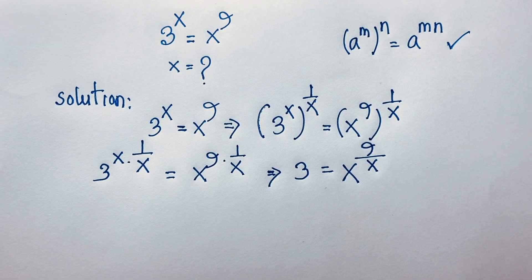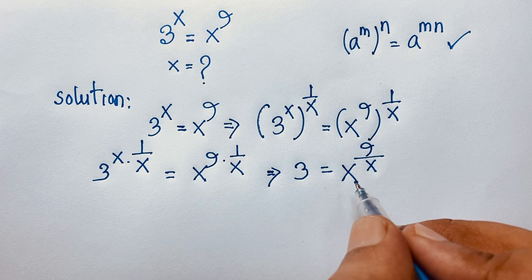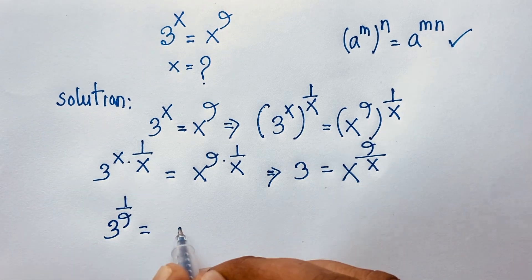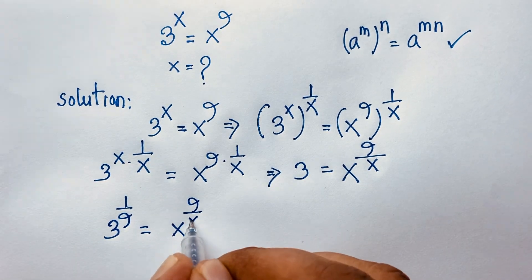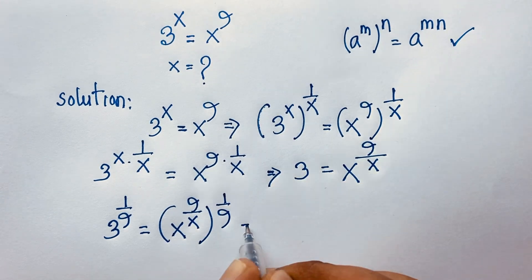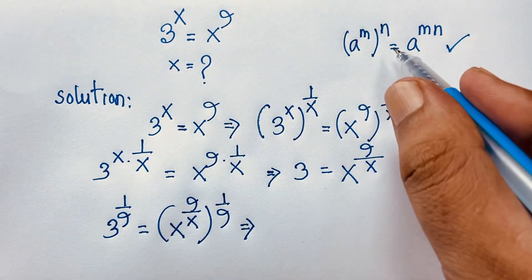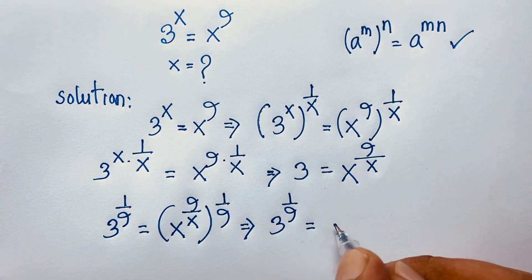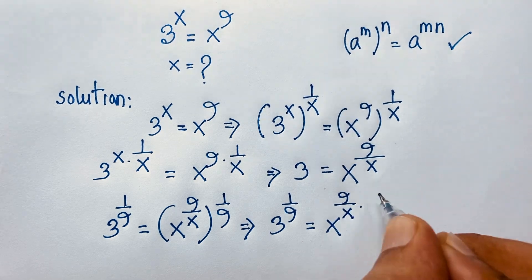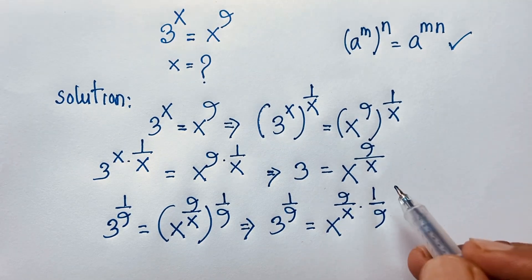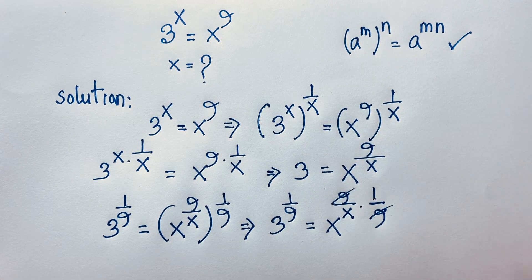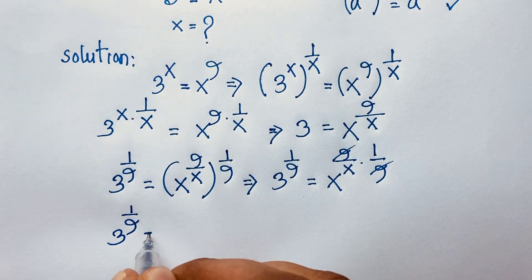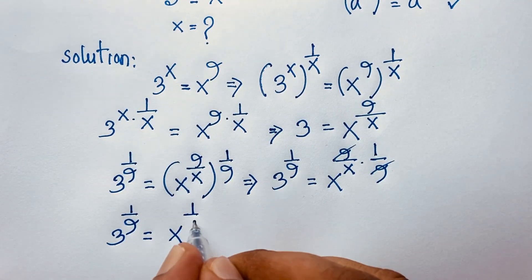Now I apply both-side 9th root, that is exponent 1 over 9. So it will be 3^(1/9) equals x^(9/x) to the power 1/9. Applying the exponential formula again, 3^(1/9) equals x^(9/x · 1/9). The 9s cancel out, and we find: 3^(1/9) equals x^(1/x).